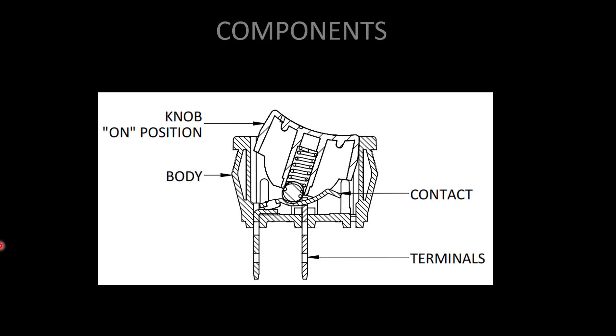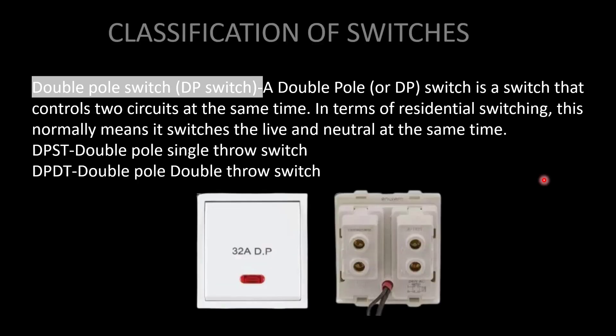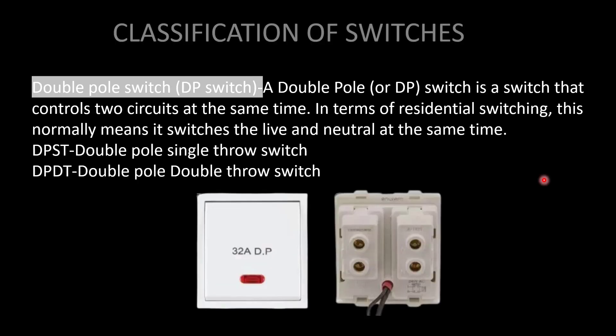We can classify switches as single pole (SP) switch and double pole (DP) switch. An SP switch is the most basic general-purpose switch, used to control a device from one location. You can see single pole switches everywhere. It has two terminals, L1 and L2.